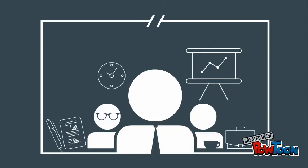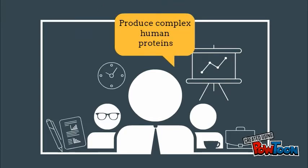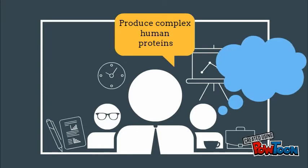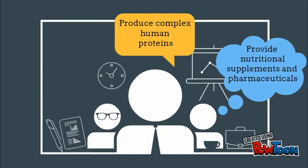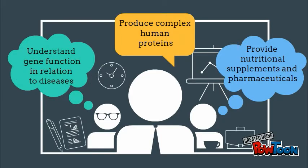In addition, transgenic farm animals have been looked at as a way to produce complex human proteins. They can also provide nutritional supplements and pharmaceuticals such as growth hormone and insulin. And finally, they can help understand how genes function in relation to diseases.